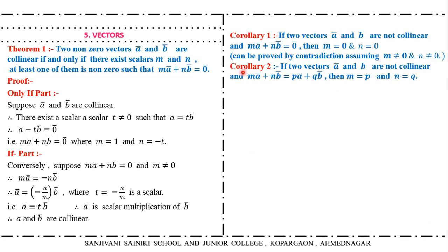The second corollary: if two vectors A bar and B bar are not collinear, and M·A bar plus N·B bar equals P·A bar plus Q·B bar, then we must have M equal to P and N equal to Q. If the two vectors are not collinear then this is necessarily the case.